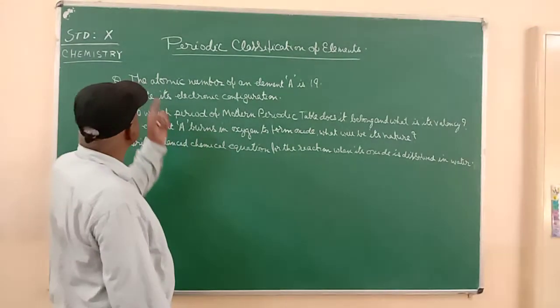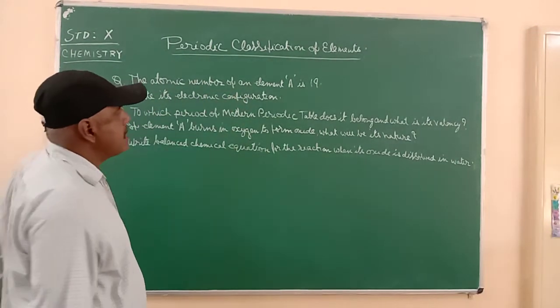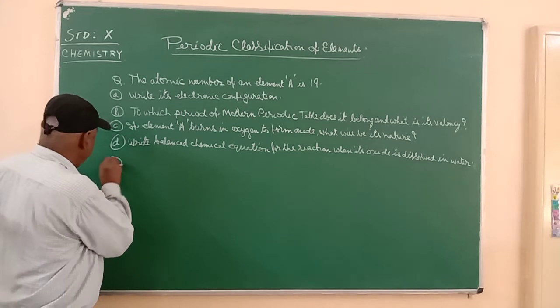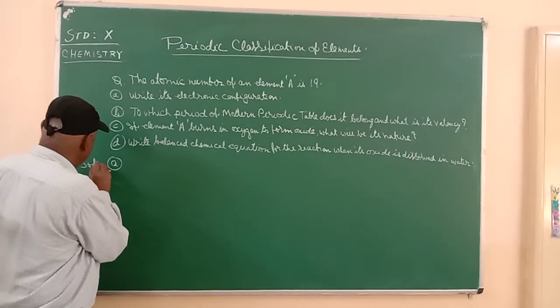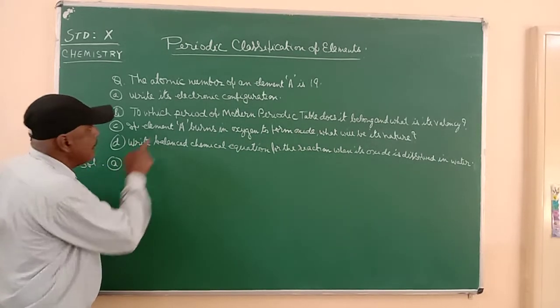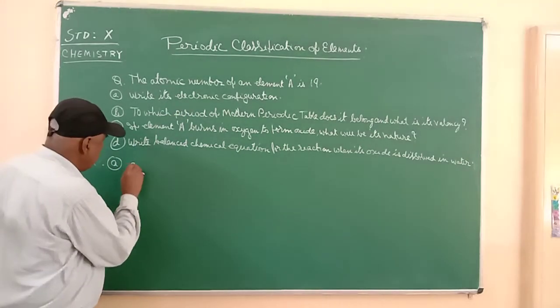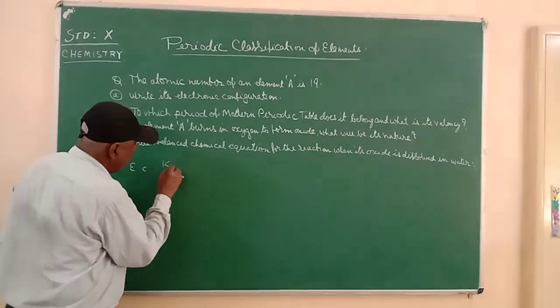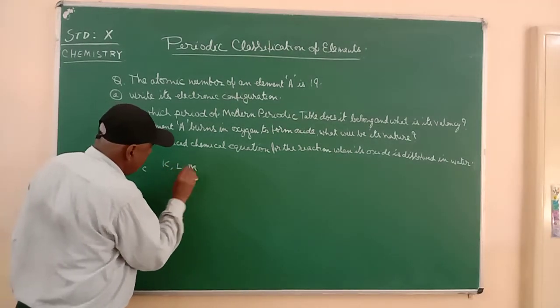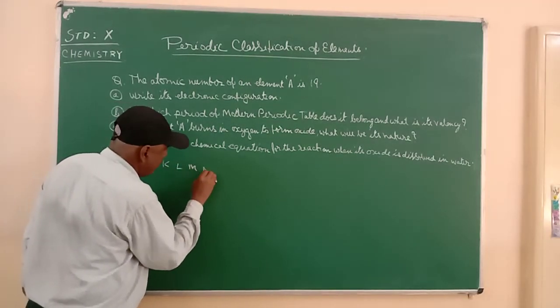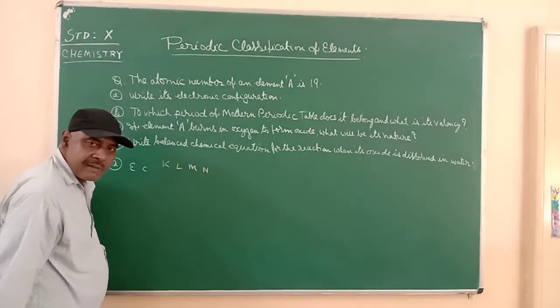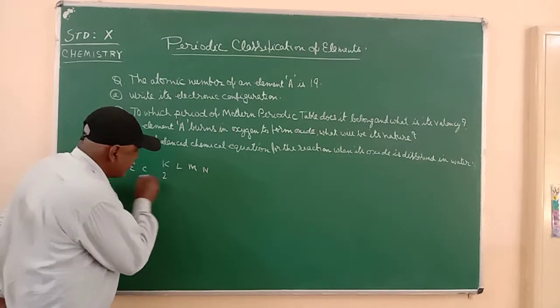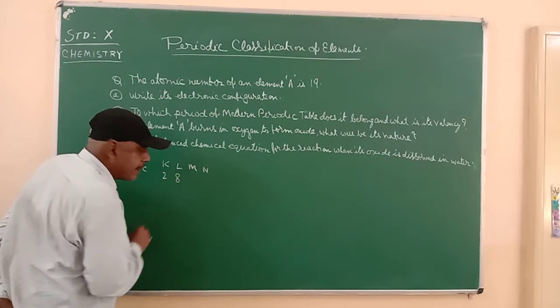Let us have the solution. The atomic number of the element is 19. What will be its electronic configuration? We know K, L, M, N. These are the shells. In the first shell 2 electrons. In the second shell also 8 electrons.